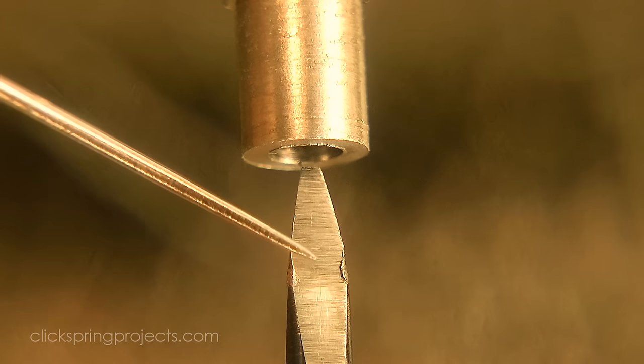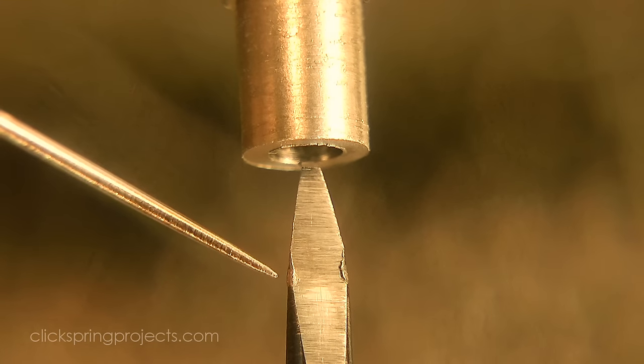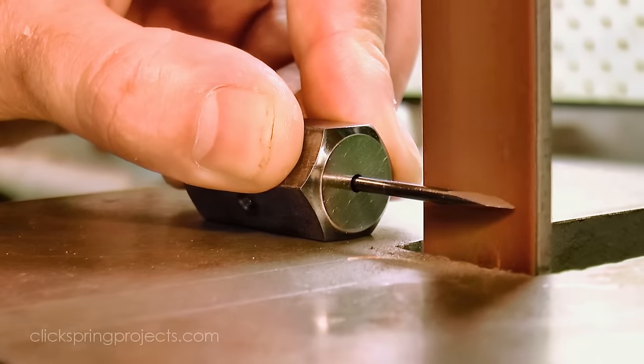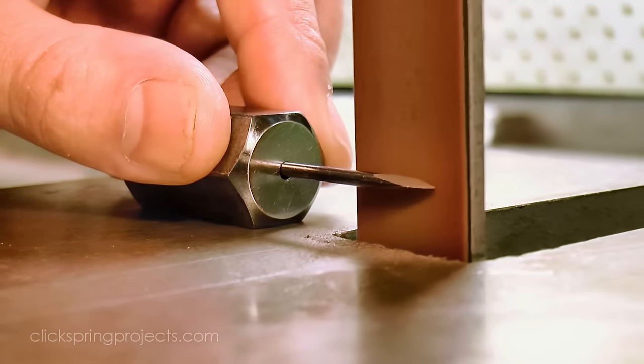And finally, although it lasts very well on brass, it does lose its edge quite quickly on something like drill rod. When it does, just give it a quick touch on the belt sander and you're good to go again.